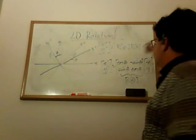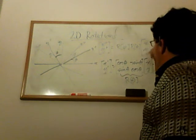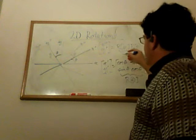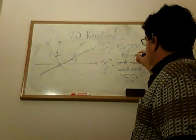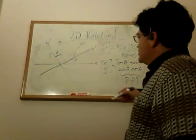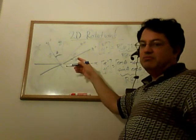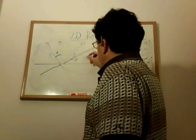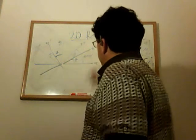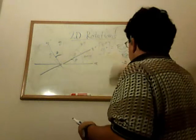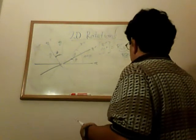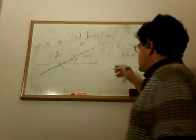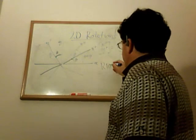Remember, matrices multiply from left to right. So a rotation by angle theta followed by a rotation by angle phi is equal to R of theta plus phi. Because a rotation by theta followed by a rotation by phi is equivalent to a single rotation by theta plus phi. You can also derive this explicitly in terms of the coefficients of the matrices, giving R of theta plus phi.